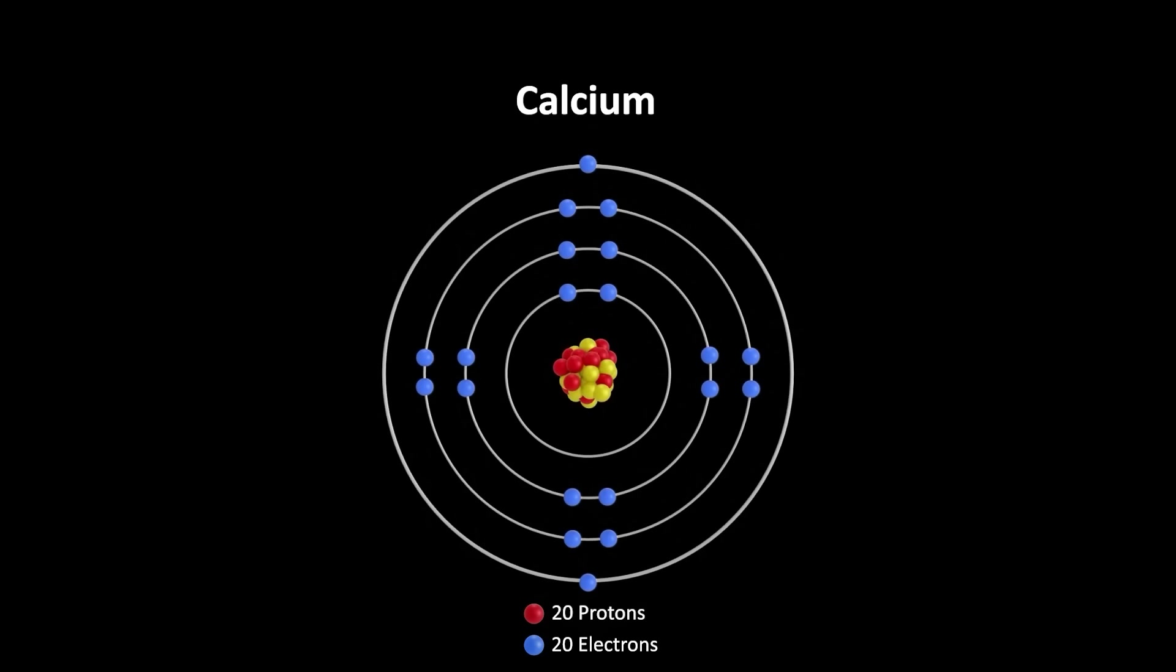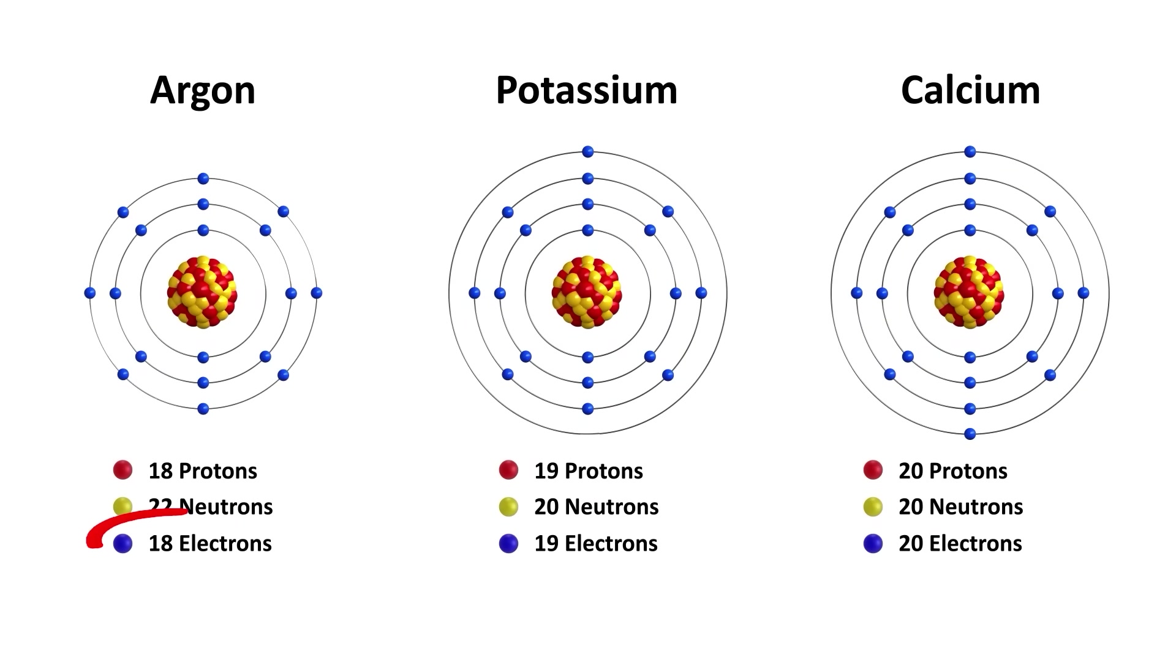Now this needs further explaining. First, if the number of electrons determines the properties, then why don't we classify elements based on their number of electrons instead of protons? This is a good question and there is a good answer for this. But before we do that, I'd like to give a big shout out to our sponsor Soylent.